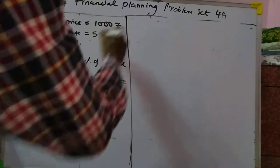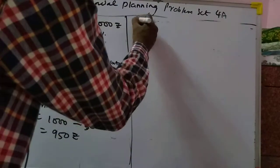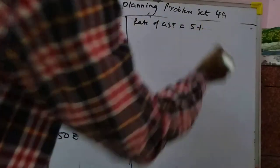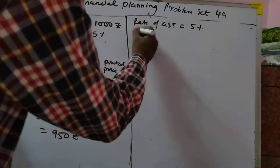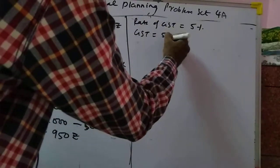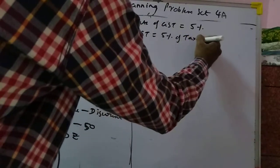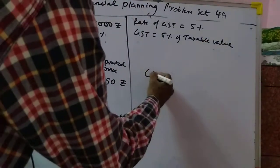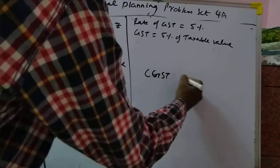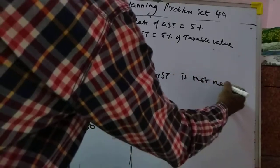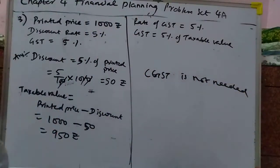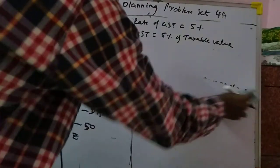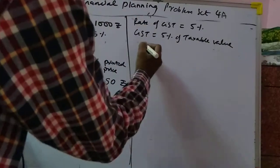Now find the taxable value: taxable value is equal to printed price minus discount, that will become 1,000 minus 50, so you get 950 rupees. The rate of GST is 5%. GST calculation is needed but CGST/SGST breakdown is not asked.